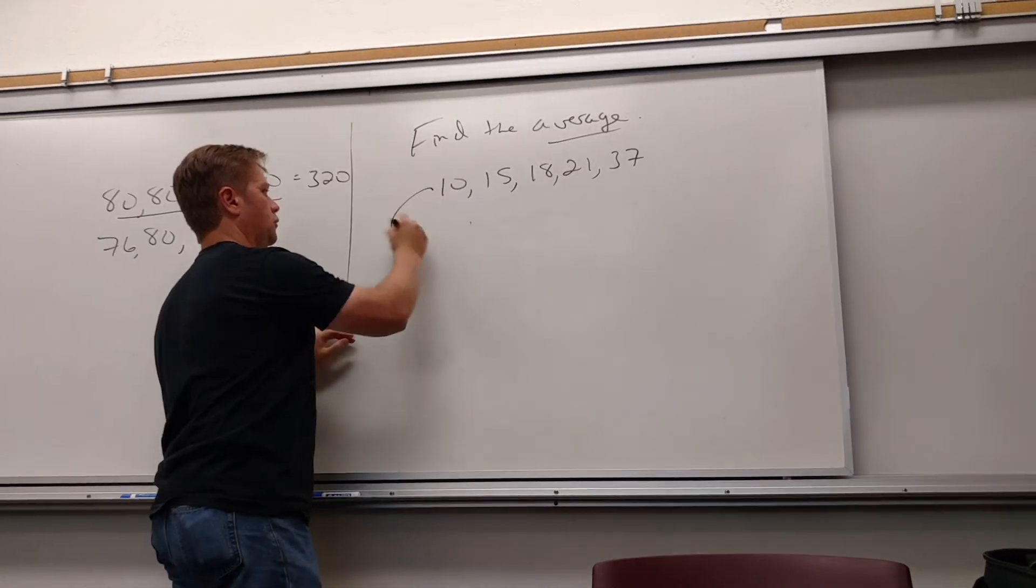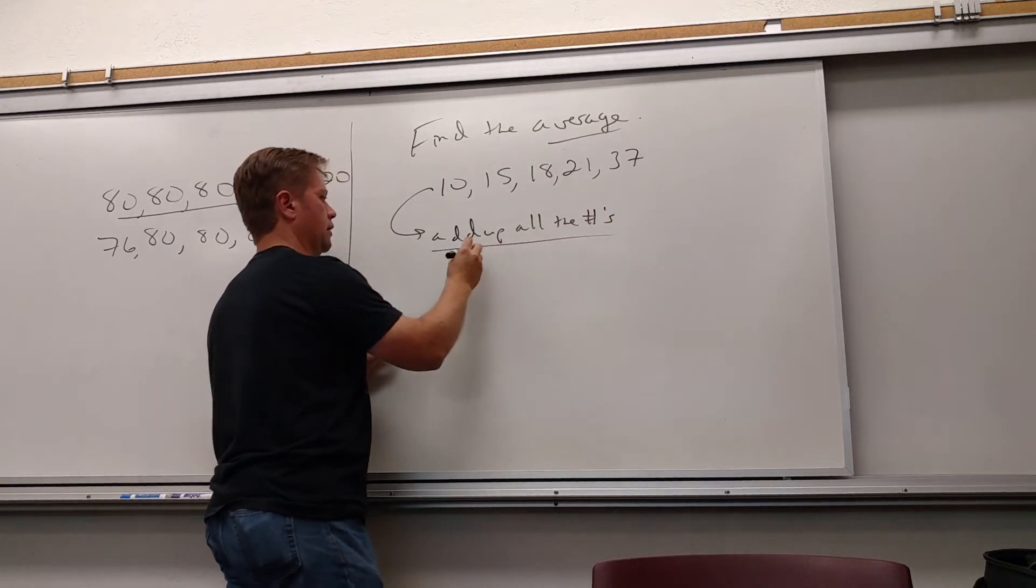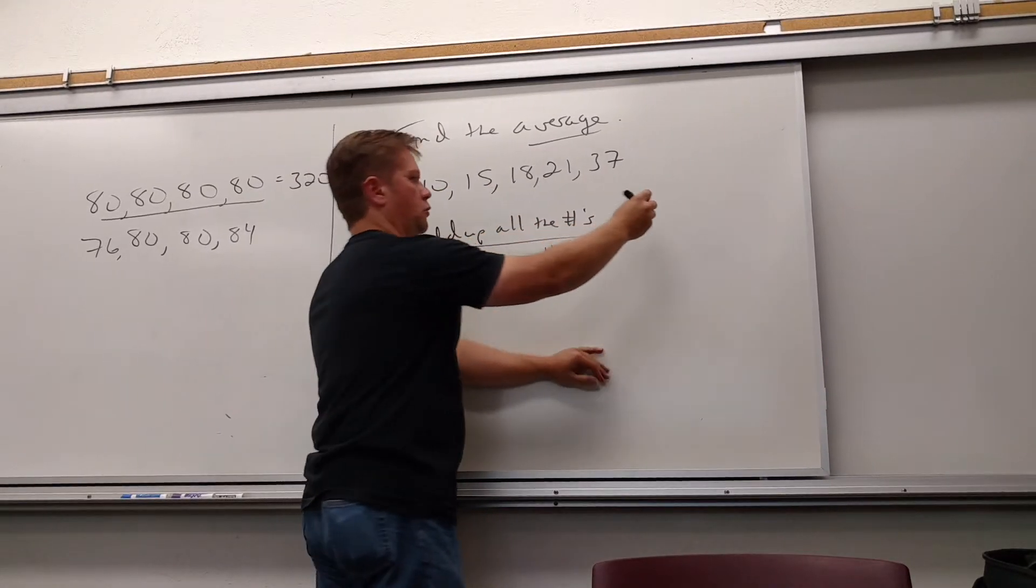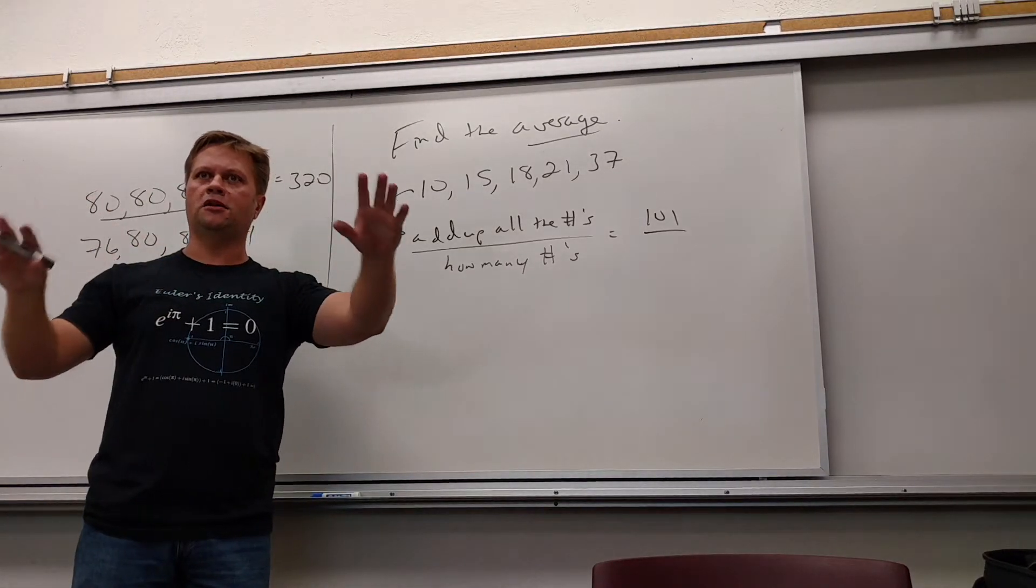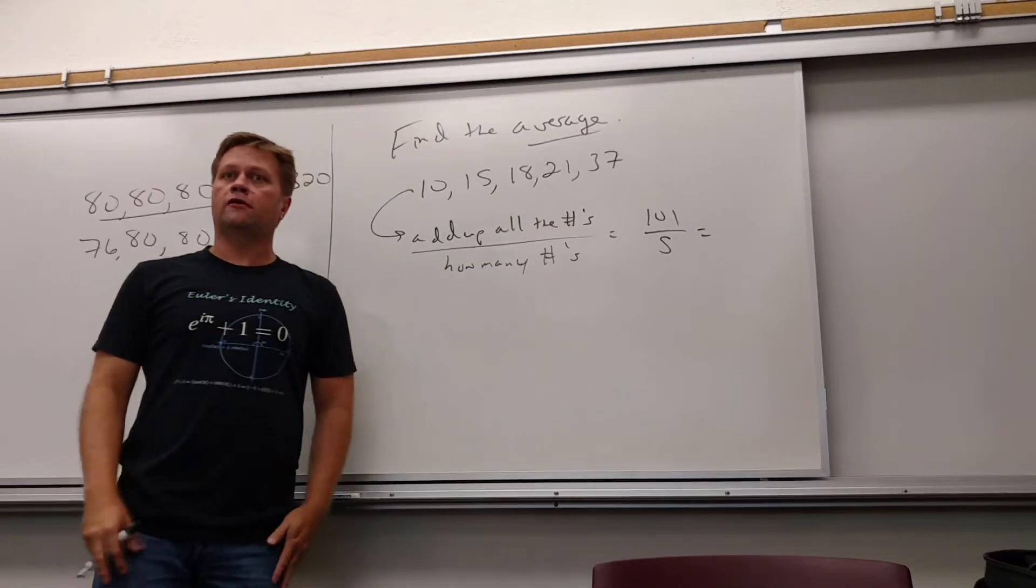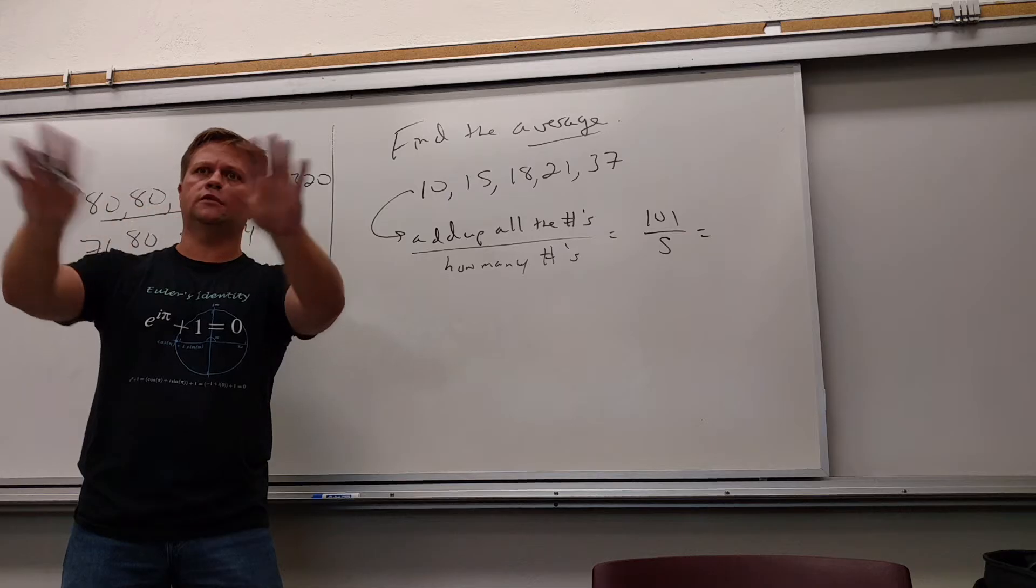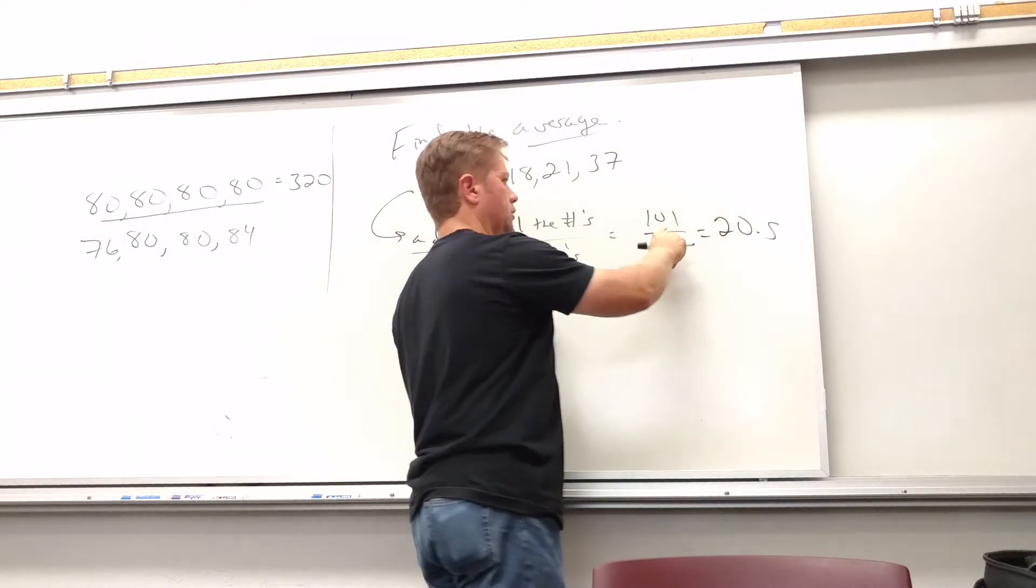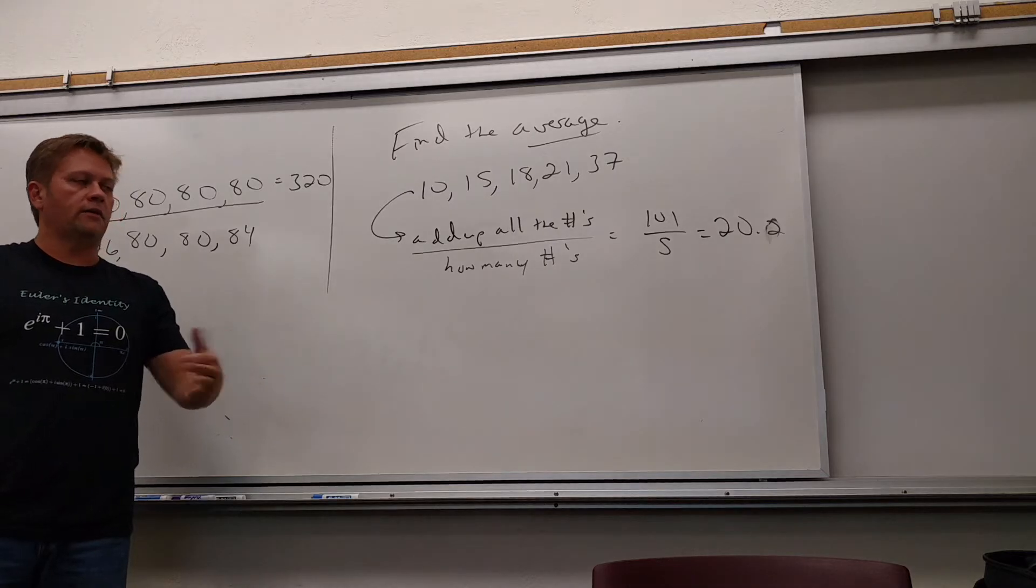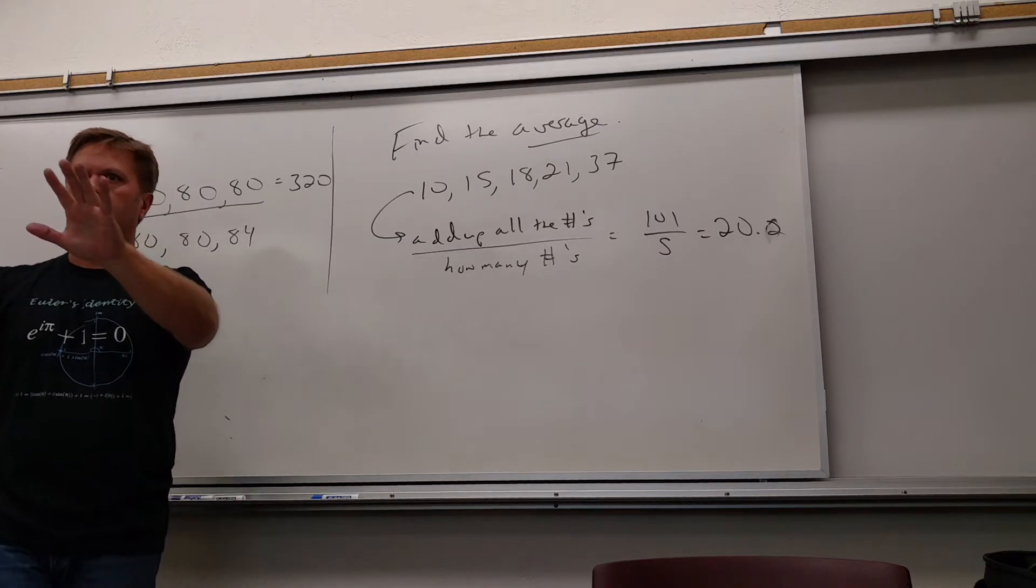All right, let me make sure you understand. So if you add up all the numbers and then divide by how many there are? When you add all these up, you get 101. If you don't trust me, you can do it. Add them all up. And then how many are there? Five. And when you do 101 divided by five, you get 20.2. Do 101 divided by five. That's where the 20.2 comes from.